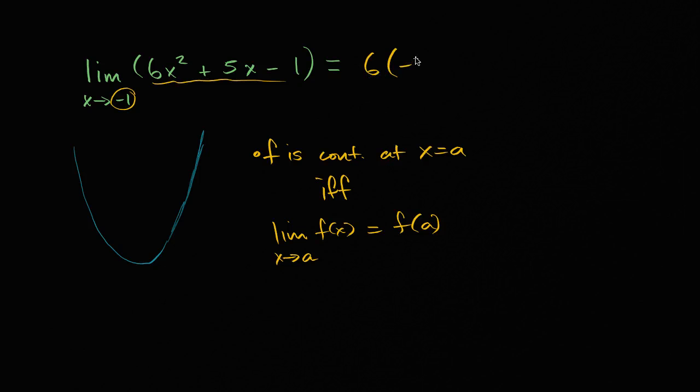This is going to be six times negative one squared, plus five times negative one minus one. So that's just one, this is negative five. So it's six minus five minus one, which is equal to zero. And we are done.